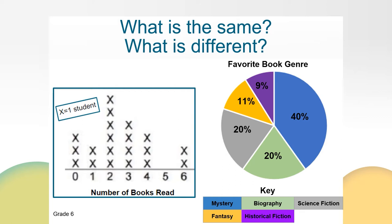Why might Mrs. Hogan survey her class on both of these topics? What might the purpose of each graph be? If Ms. Hogan is planning to build her classroom library, she might want to know her students' favorite book genres. This information would help her to choose books her students will be interested in and plan lessons that will be exciting for her students. If Ms. Hogan would like to understand how often her students read, she might ask them about the number of books they read over the summer. This might help her to set a reading goal for her students throughout the year. Both questions reveal data that is very helpful for Ms. Hogan as she plans for her class.